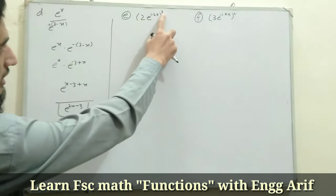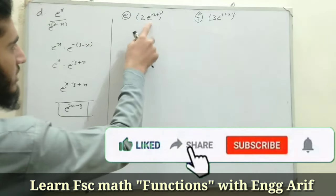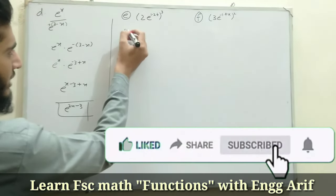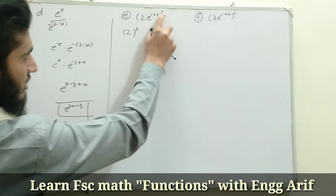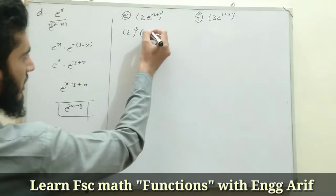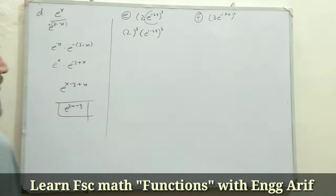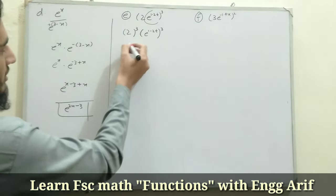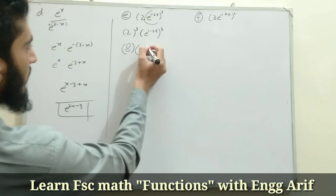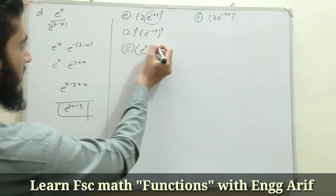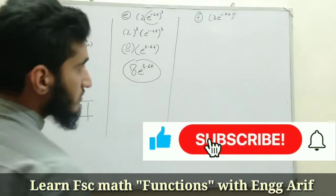For part e we have (2e^(1.2t))^3. The power 3 applies to both the constant 2 and the exponential function. So it becomes 2^3 · (e^(1.2t))^3. Now 2^3 = 8, and applying the power-of-a-power law to the exponential: e^(1.2t · 3) = e^(3.6t). The final result is 8e^(3.6t).